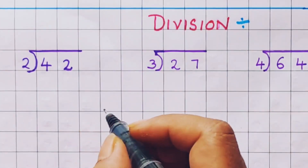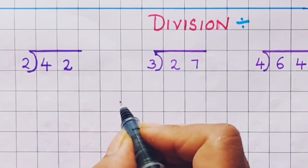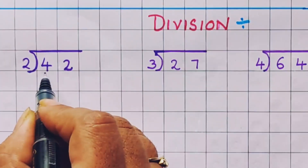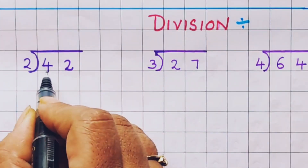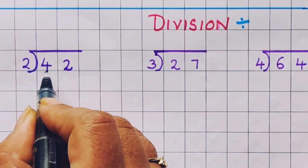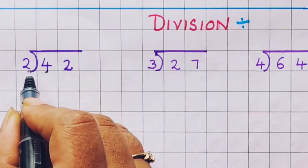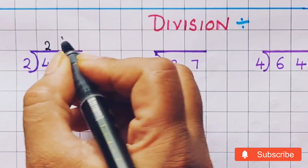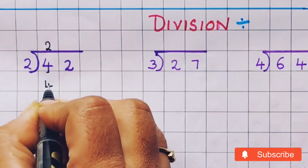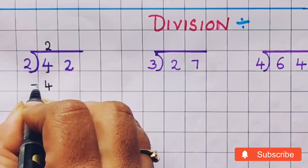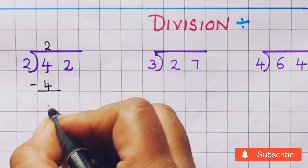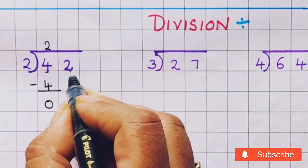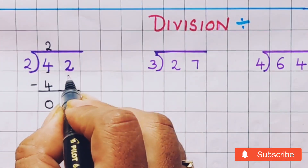In order to do the division, we need to know the tables. Let's start with the table of 2. We have to see whether the first digit 4 appears in the table of 2. 2 ones are 2, 2 twos are 4. So 2 twos are 4. Then we do the subtraction and we get 0.